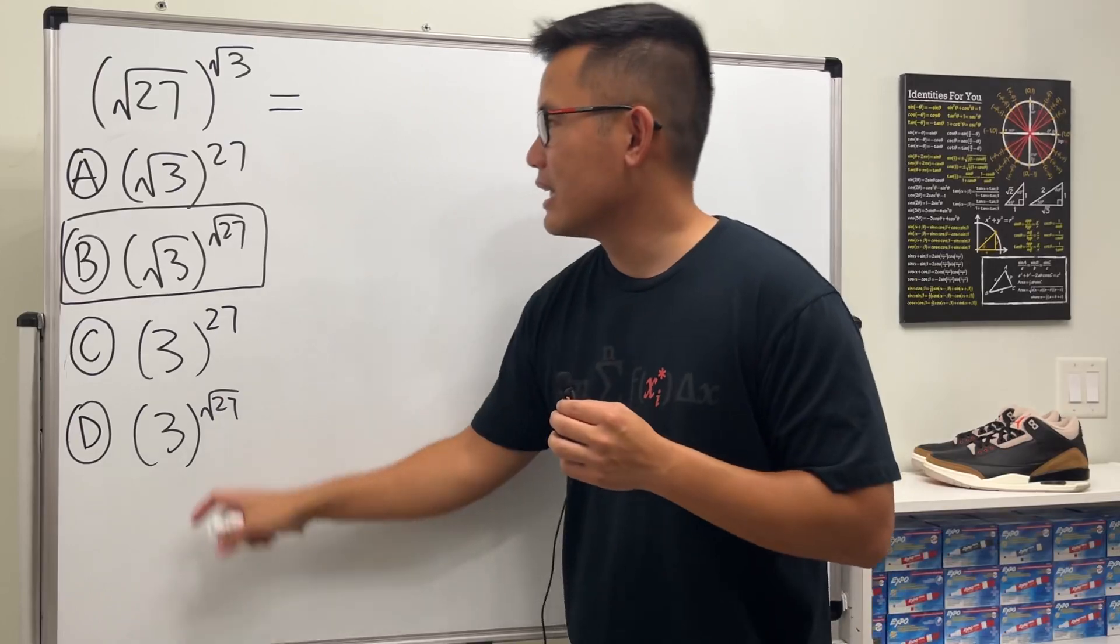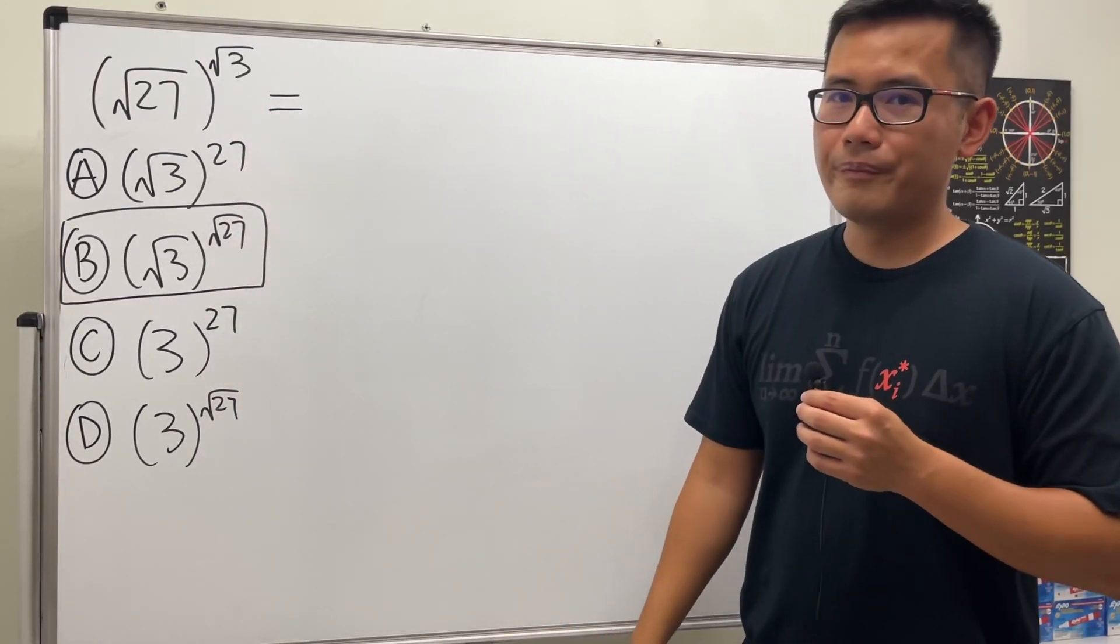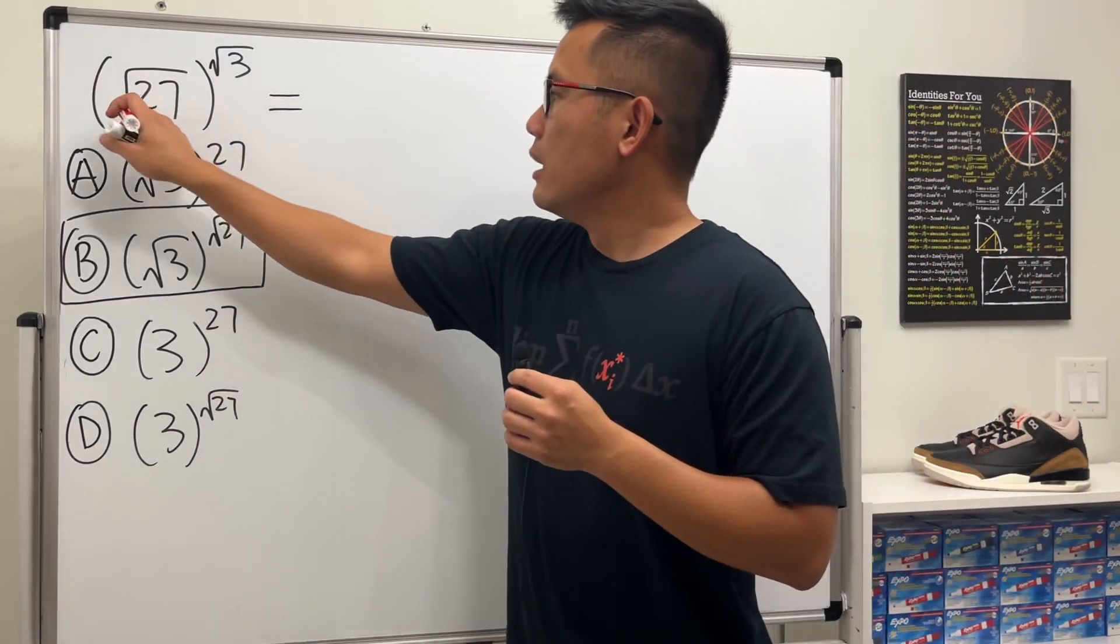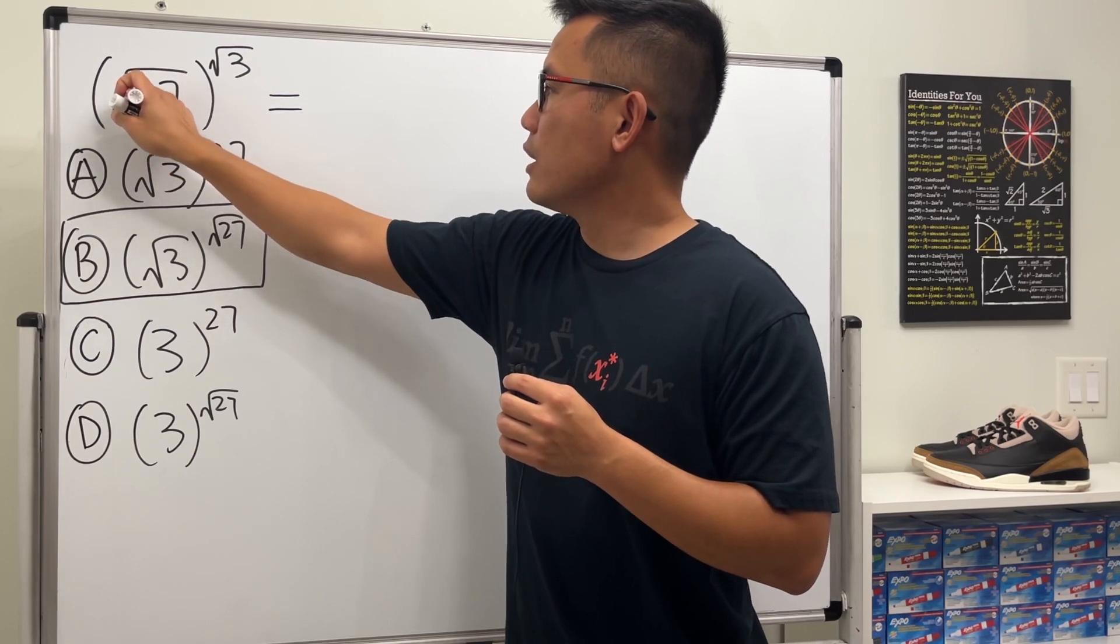But now let me just verify it with you guys that they are indeed equal. This is how we can do it. Let's look at the square root of 27 first.